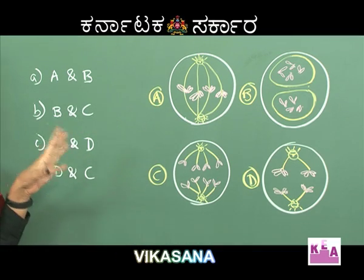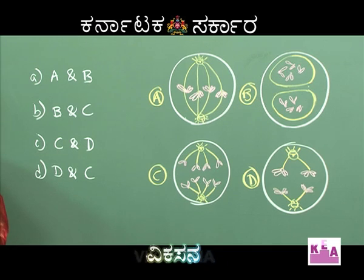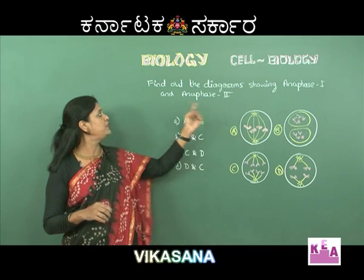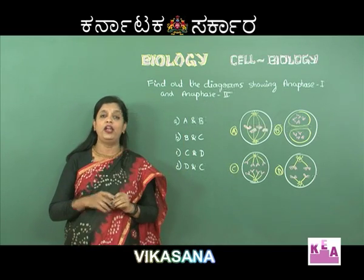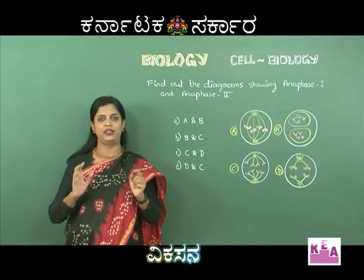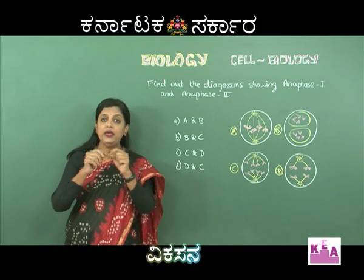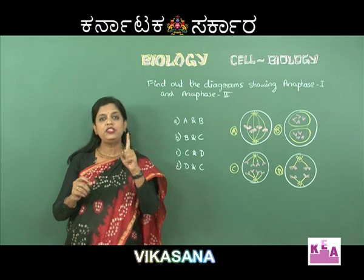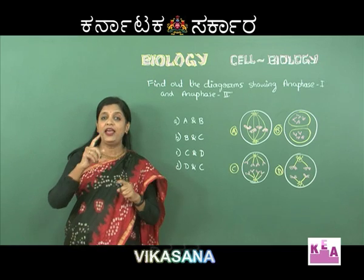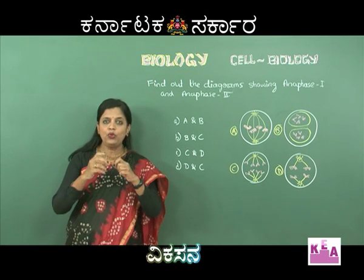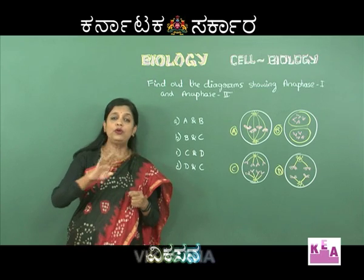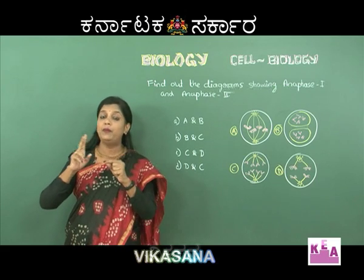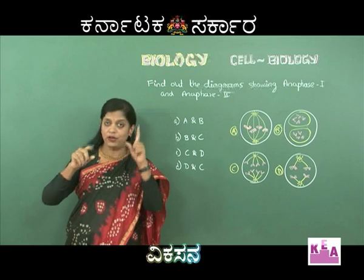The diagrams show both mitosis and meiosis diagrams. What is asked? Find out the diagrams showing Anaphase I and Anaphase II. Anaphase I and Anaphase II are meiosis structures. What is the difference between Anaphase I and Anaphase II? Anaphase I is exactly the reductional division - chromosomes will become half. Suppose the original chromosome number is 4, they become only 2 after Prophase I exchanges.